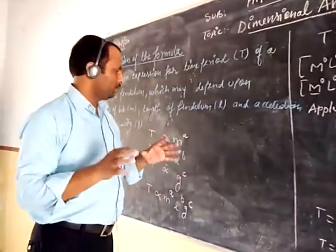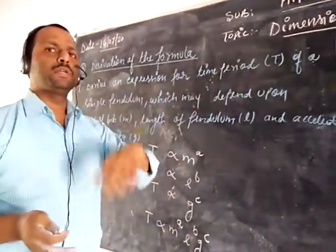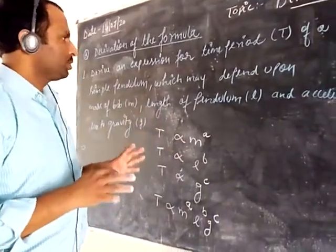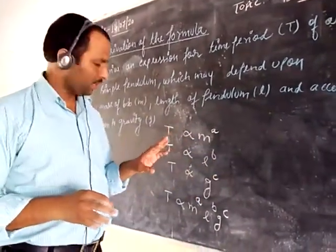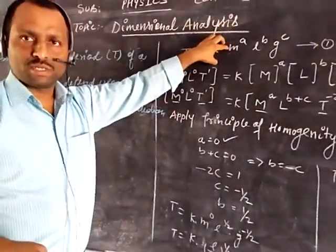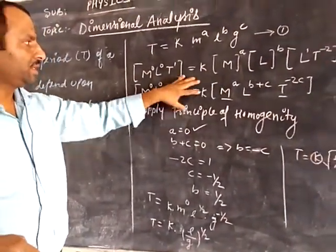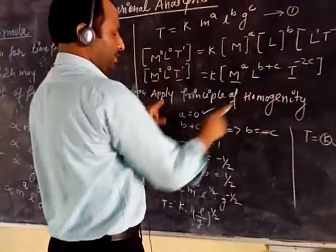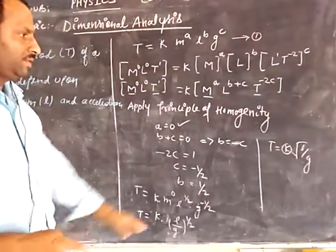Once again, I will repeat how you have to approach the problem. First, you will read the question carefully — what are the things given, the dependence, which quantity depends upon which quantity. In the question it will simply be given that the time period depends upon the mass, so we will assume constants a, b, and c. We will put all together, remove the constant of proportionality, and put a constant k. After that, we will write the dimensions. By using the principle of homogeneity, we will equate their powers — mass, length, time. We will get certain equations, solve those equations to find values of a, b, and c, and put them into equation 1 to get the answer.